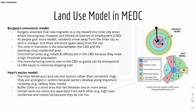A buffer zone is a zonal area that lies between two or more areas, for example between zones 3 and 4. An important note is that certain land-use zones are separated from each other — for example, high-class residential and industrial zones do not mix. However, that might not always be the case, as occasionally high-class residential areas can be found near industrial zones, though this is very rare.